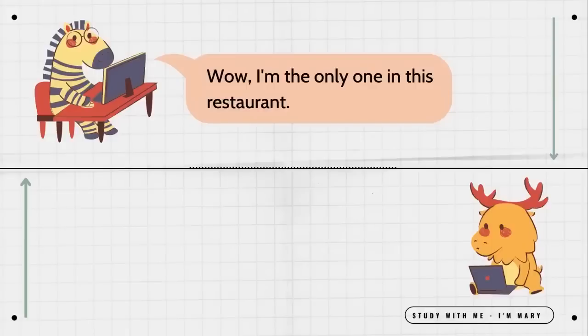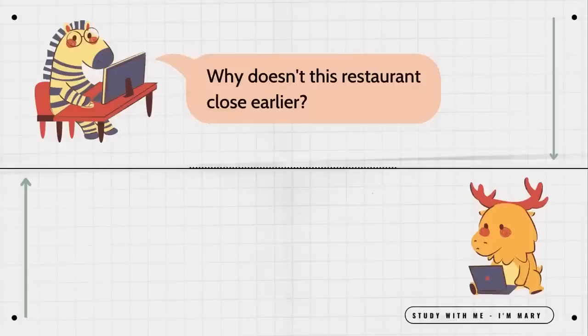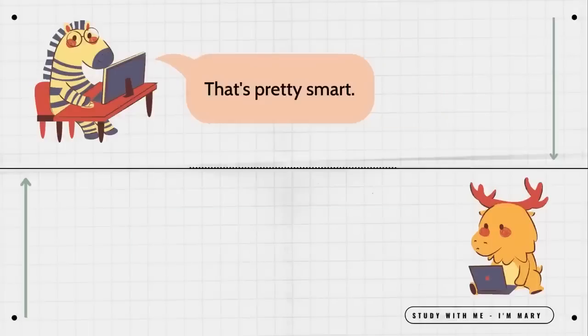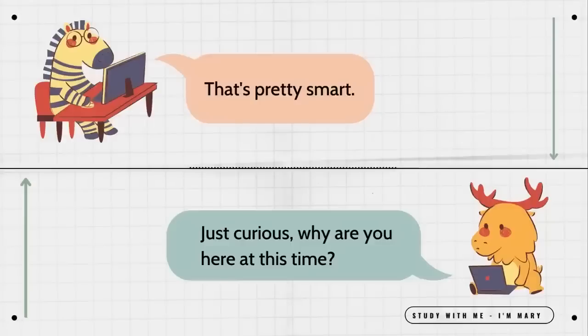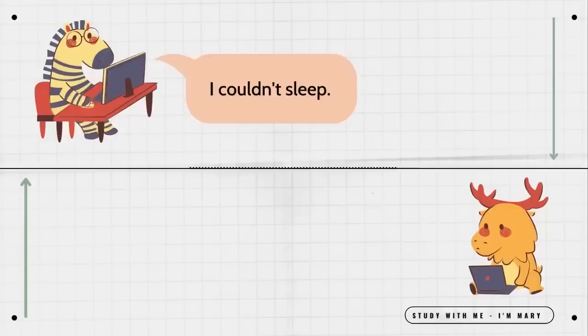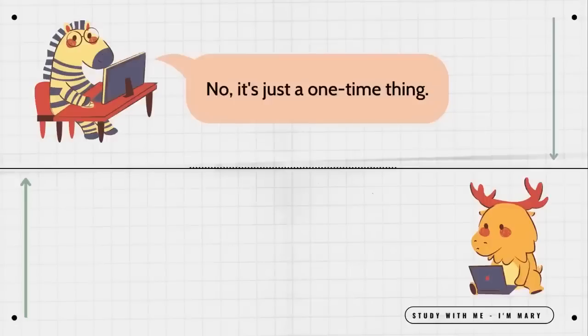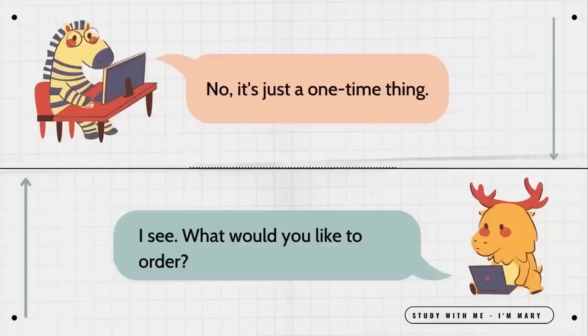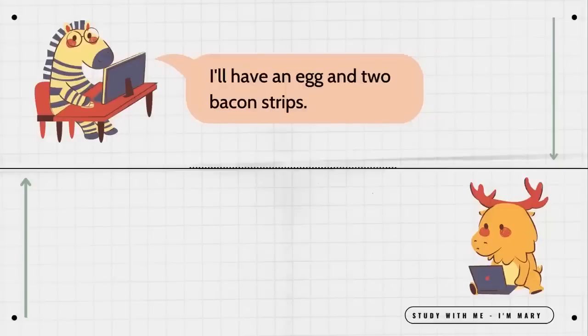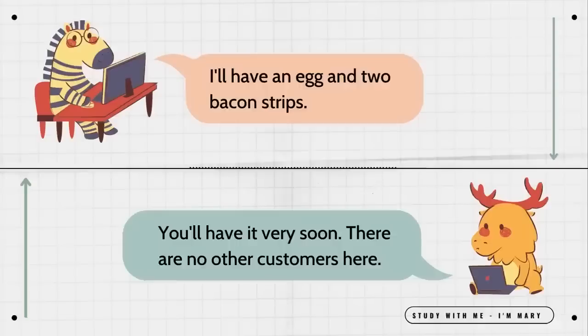I'm the only one in this restaurant. Well, it is 1 a.m. Why doesn't this restaurant close earlier? It's trying to make more money. That's pretty smart. Just curious. Why are you here at this time? I couldn't sleep. Maybe you should see a doctor. No, it's just a one-time thing. I see. What would you like to order? I'll have an egg and two bacon strips. You'll have it very soon. There are no other customers here.